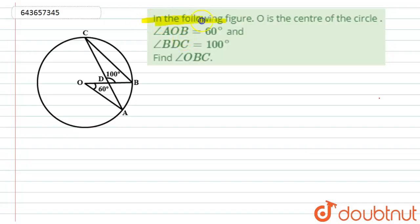Here we have given in the following figure, O is the center of the circle. Angle AOB is equal to 60 degrees and angle BDC is equal to 100 degrees. Then find the angle OBC.